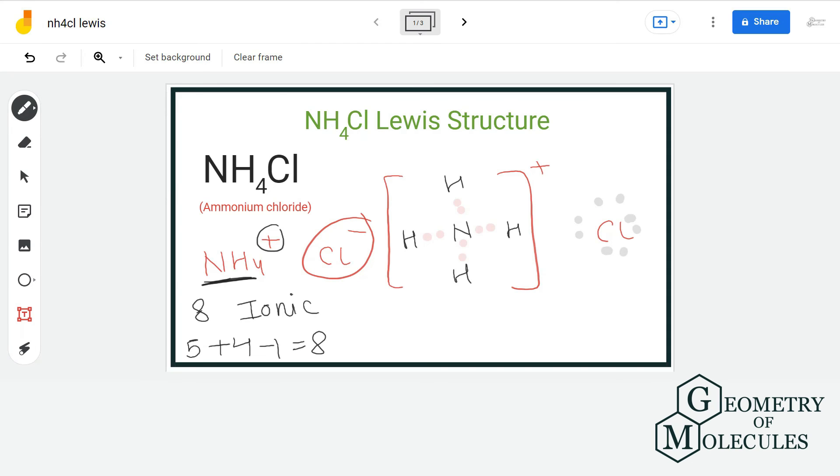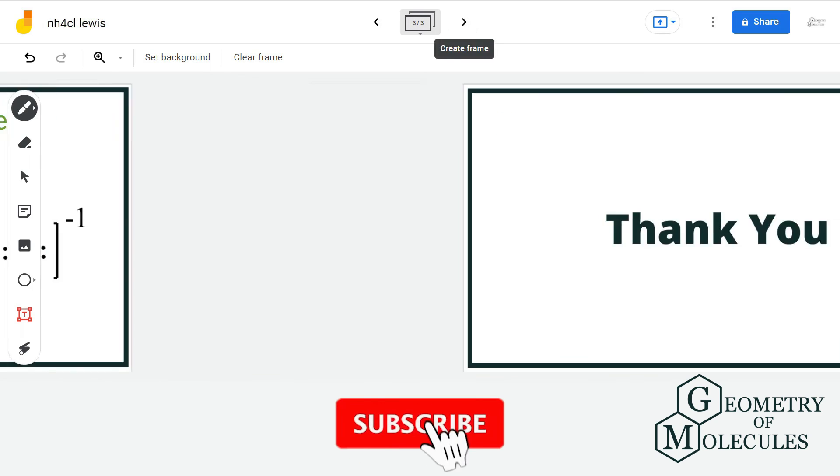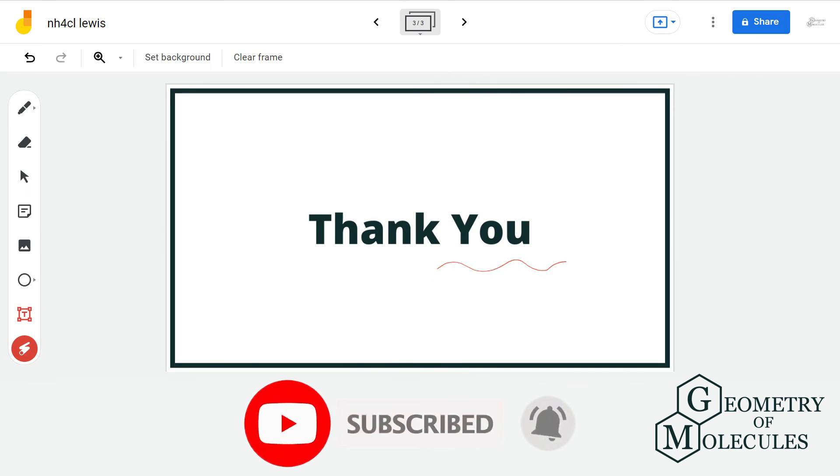It's an anion so we'll enclose it within a bracket. This is the final Lewis structure of NH4Cl. For more such videos make sure to subscribe, and thank you for watching.